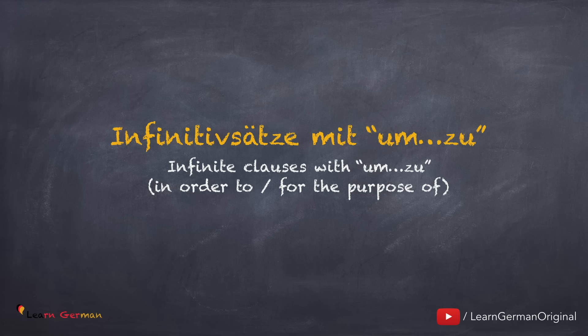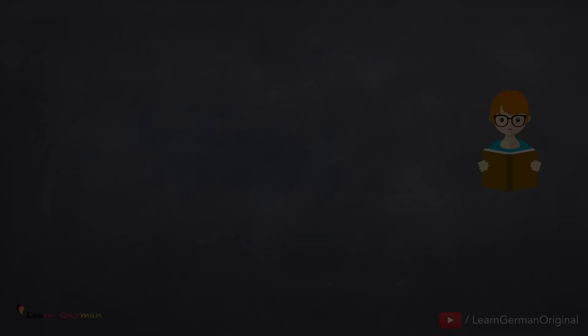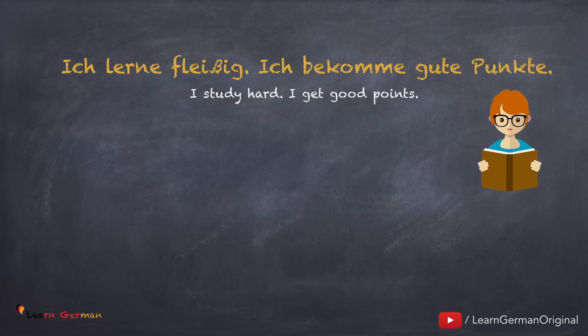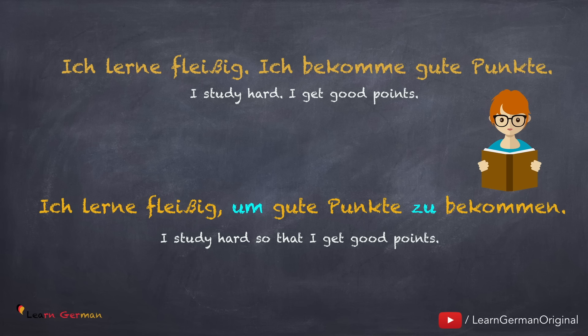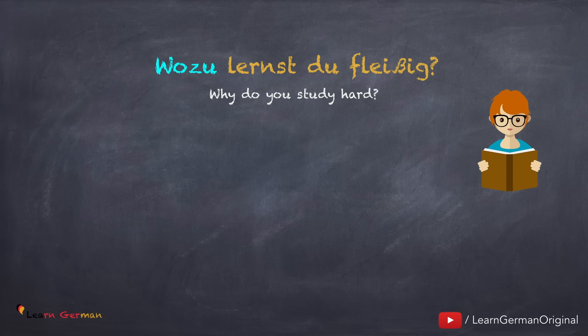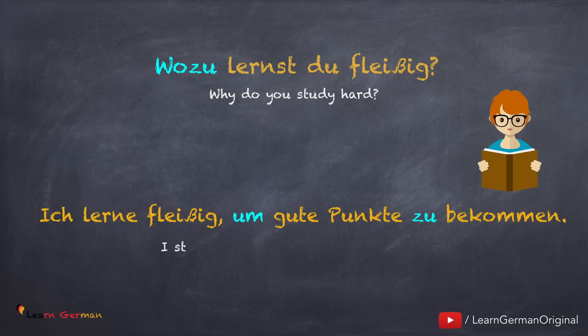Jetzt schauen wir uns an, wie man Infinitivsätze oder Finalsätze mit um…zu formuliert. Hier ist ein Beispiel. Ich lerne fleißig, ich bekomme gute Punkte. Wir bringen die zwei Sätze zusammen und man sagt: Ich lerne fleißig, um gute Punkte zu bekommen. Die Frage in diesem Fall ist auch: wozu lernst du fleißig? Ich lerne fleißig, um gute Punkte zu bekommen. Man hat hier ein Ziel oder eine Absicht, wozu man fleißig lernt.